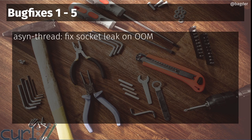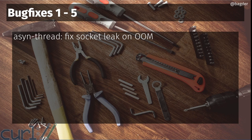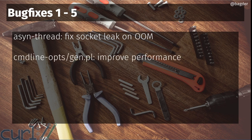One interesting fix is a long-standing socket and memory leak in the threaded name resolver, which is the default resolver in curl. When you would run out of memory while setting up the new thread for name resolving, curl could actually leak a socket and therefore memory. I also found a related memory leak in out-of-memory handling for other name resolving paths too — so better, fewer memory leaks on out-of-memory conditions.